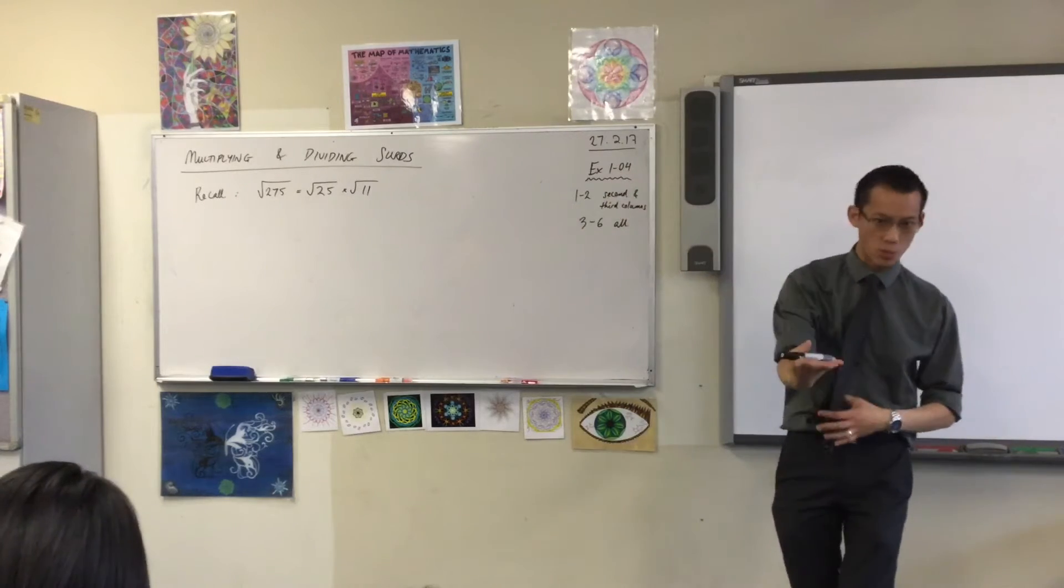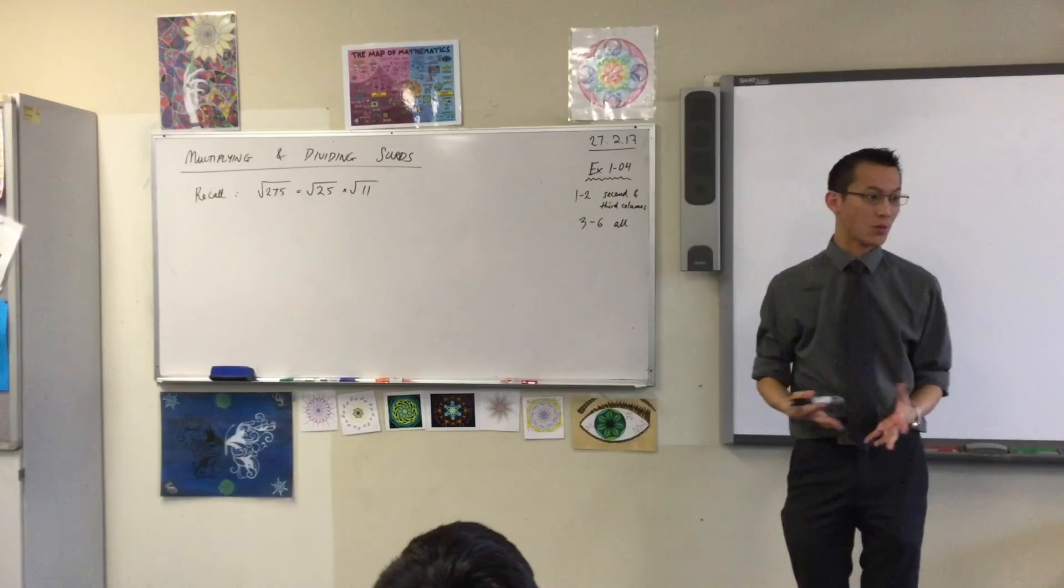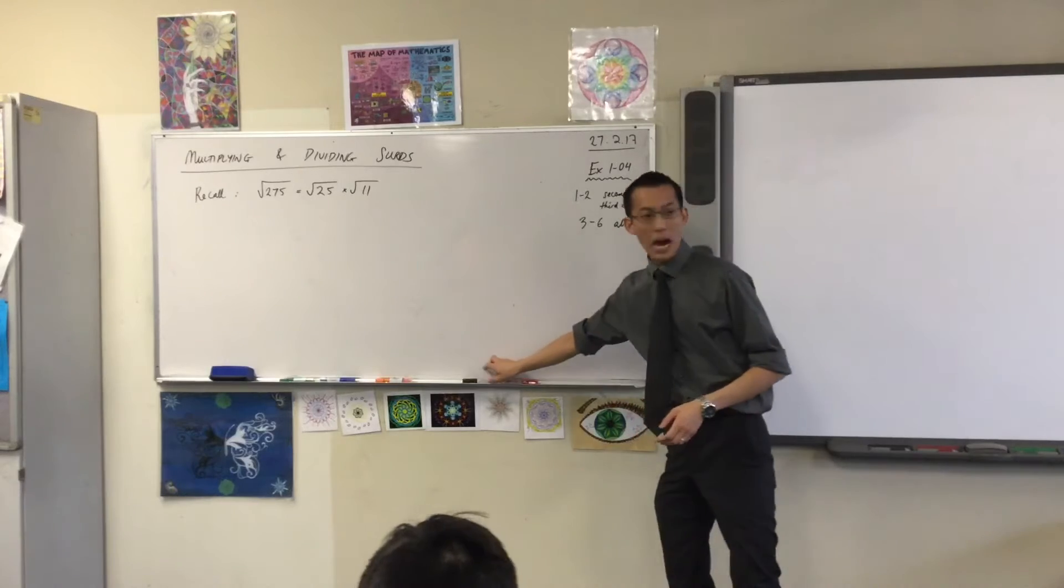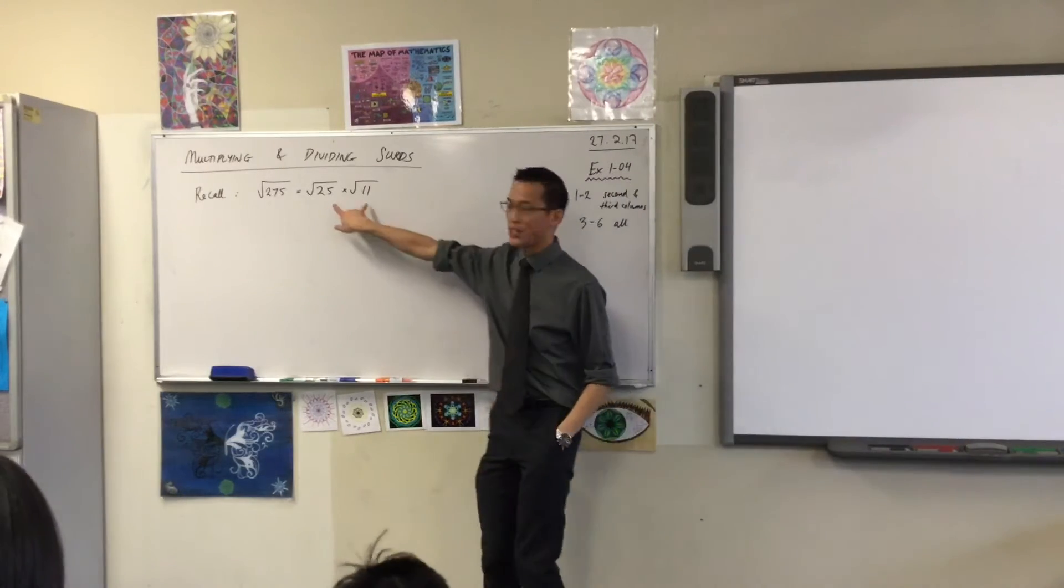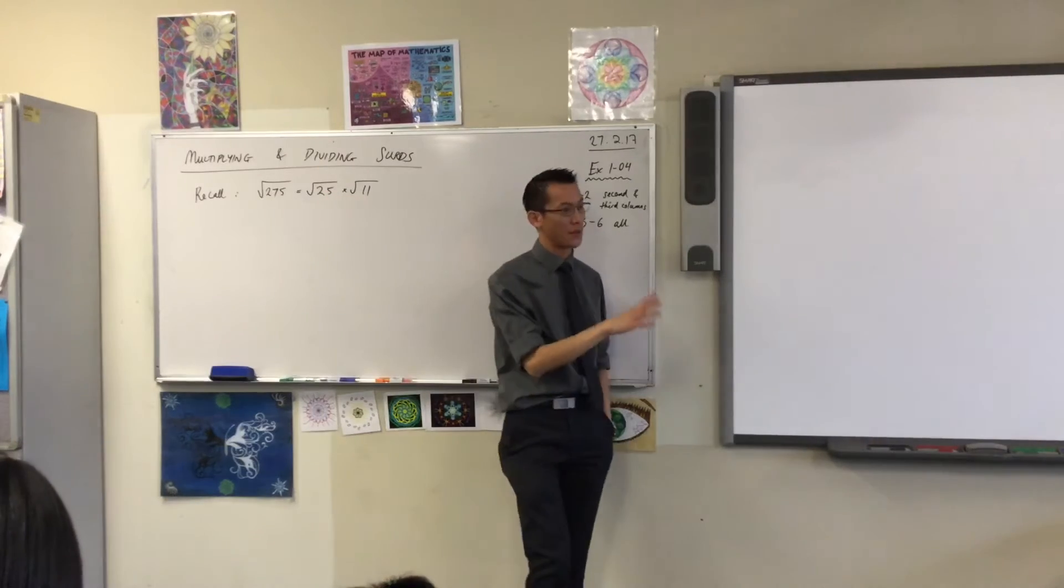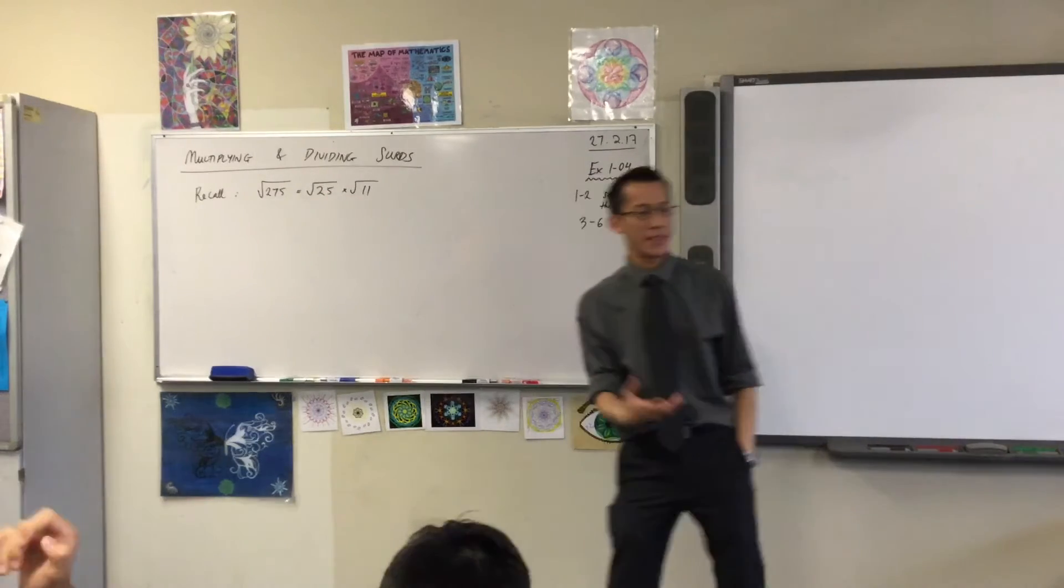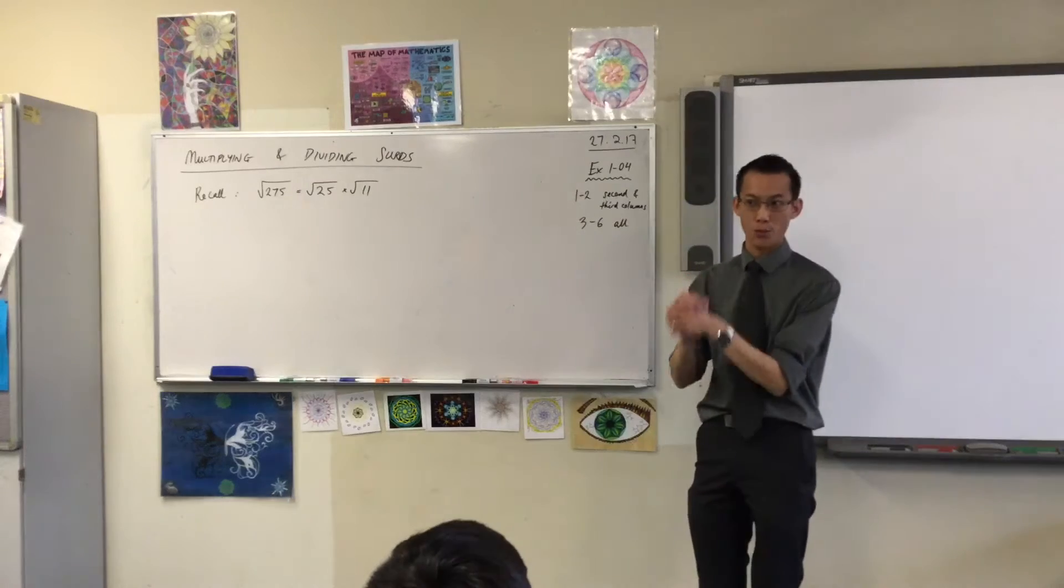You've already got this on your working, so you don't need to write it again. But I've rubbed it off, so that's why I put it back. You just did this question, right? Square root of 275. We simplified it in this exact way. And you guys know what the square root of 25 is. So once you evaluate that, it's your answer of 5 root of 11.